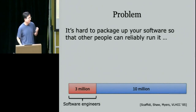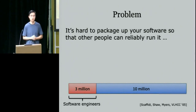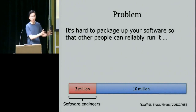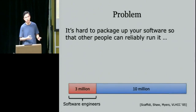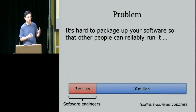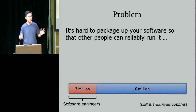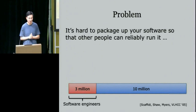Of those 13 million people writing code, only 3 million are professional software engineers who have great toolchains and deployment processes. The remaining 10 million are research scientists spanning many fields who run experiments computationally and want to share them, as well as designers doing prototypes, engineers hacking, consultants, and countless open source hobbyists and students. This software packaging problem affects a lot of people.